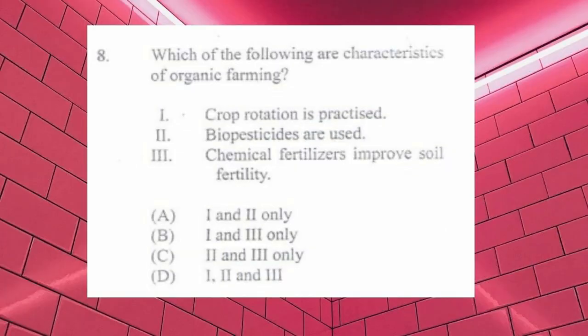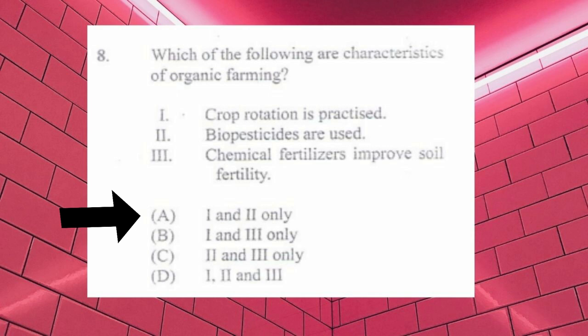Question number eight: which of the following are characteristics of organic farming? One) crop rotation is practiced, two) biopesticides are used, three) chemical fertilizers improve soil fertility. The answer is a) one and two only. Bio means living, so a pesticide made from a living thing can be used on an organic farm.